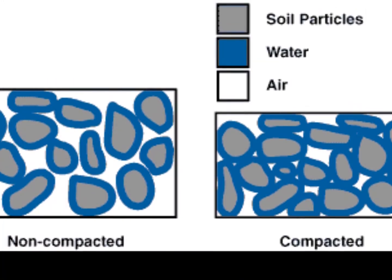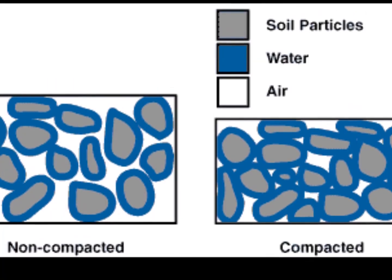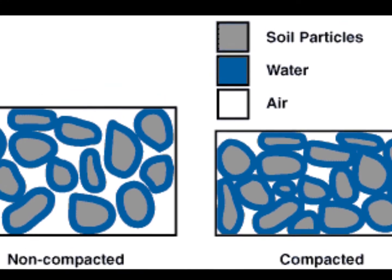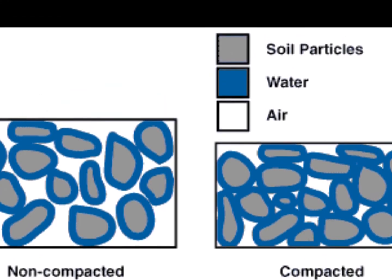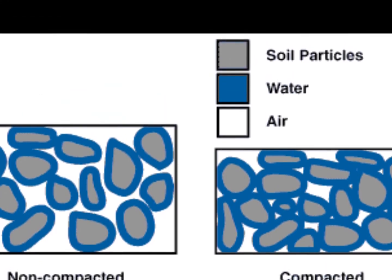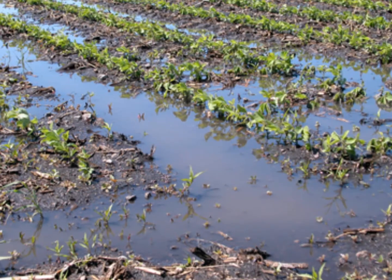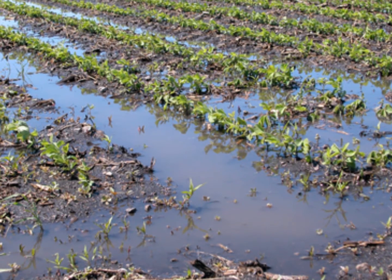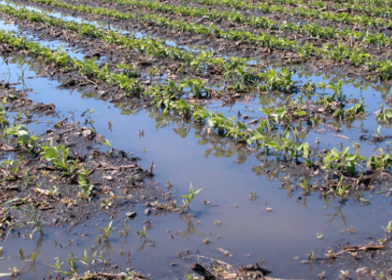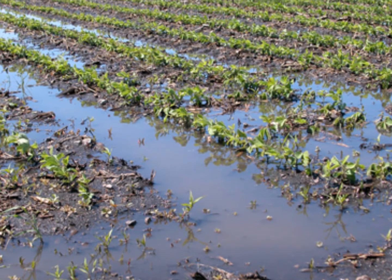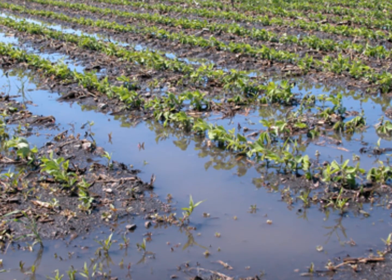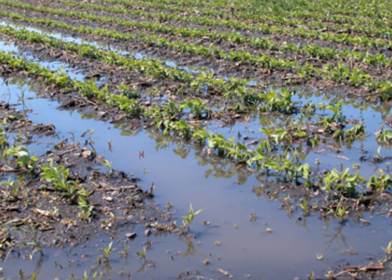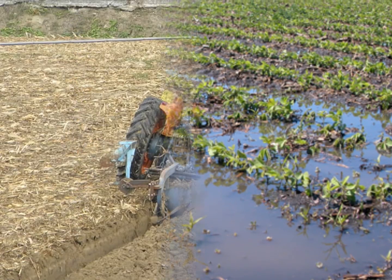Soil compaction occurs when soil particles are pressed together under pressure. This results in reduced pore space and a higher bulk density. As a result of the fewer large pores, water infiltration and drainage is decreased. Aeration suffers and root penetration declines. All these can negatively affect crop health and yields.